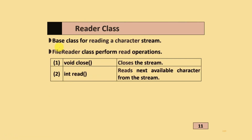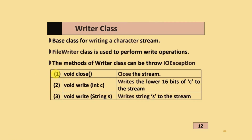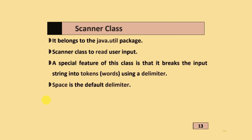The Reader class is the base class for reading a character stream, and the FileReader class performs read operations. Its methods include void close() and int read(). The Writer class is the base class for writing a character stream, and FileWriter is used to perform write operations. Methods of the Writer class can throw IOException, and include void close(), void write(), and void write(String s).